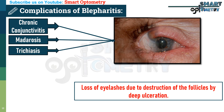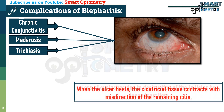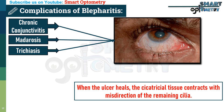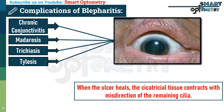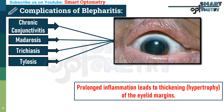Third: trichiasis — inward misdirection of cilia. When ulcers heal, scar tissue forms and contracts, pulling the remaining cilia inward and causing eyelashes to rub against the cornea. Fourth: tylosis — thickening of the tarsal border of the eyelid. Prolonged inflammation leads to hypertrophy of the eyelid margins, causing them to droop, contributing to visual and functional discomfort.